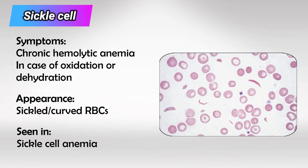Next we have sickle cells, and of course we see this in sickle cell anemia. These patients have to avoid oxidants and dehydration to avoid hemolytic anemia.